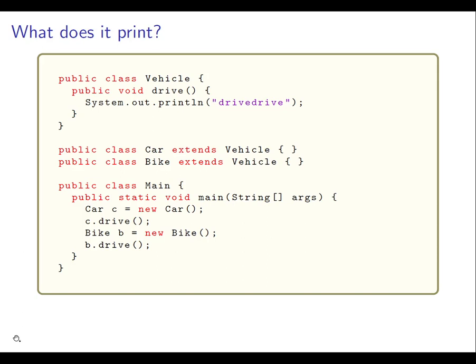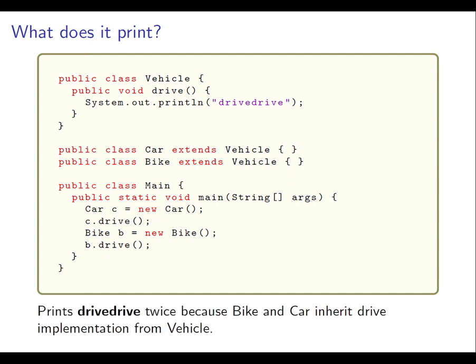Let's look at some examples. In the nature of examples that have to fit onto one slide each, these are all a bit artificial, but they should get the points across. Have a look at this. What do you think this prints? It prints drive, drive twice, because bike and car simply inherit the drive implementation from vehicle.